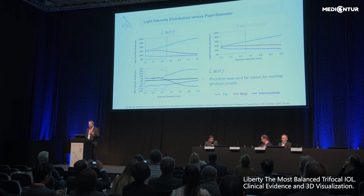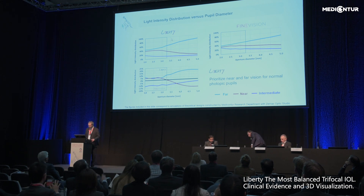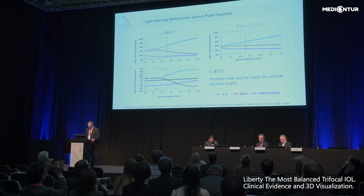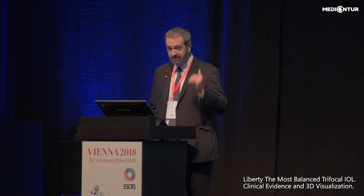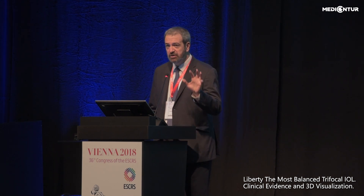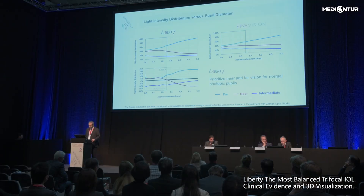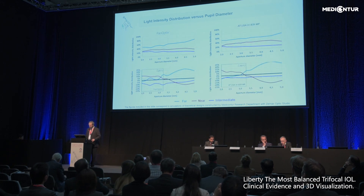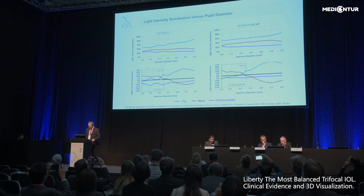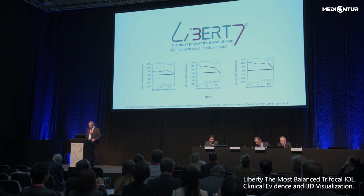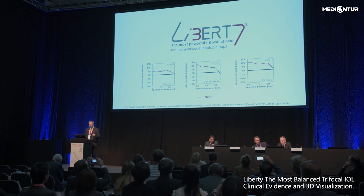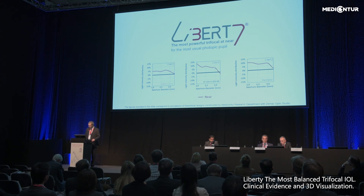When we compare this distribution of light with other lenses for this reading pupil, we have here Liberty versus fine vision. The black line is equal distribution — above is better for Liberty, below is better for fine vision. For this reading pupil condition, we have better distribution of Liberty versus fine vision for far and also for near. When we compare also with Panoptis and Atelisa for this reading pupil, we have also better performance for near and also for far, and with Atelisa improved distribution as well.